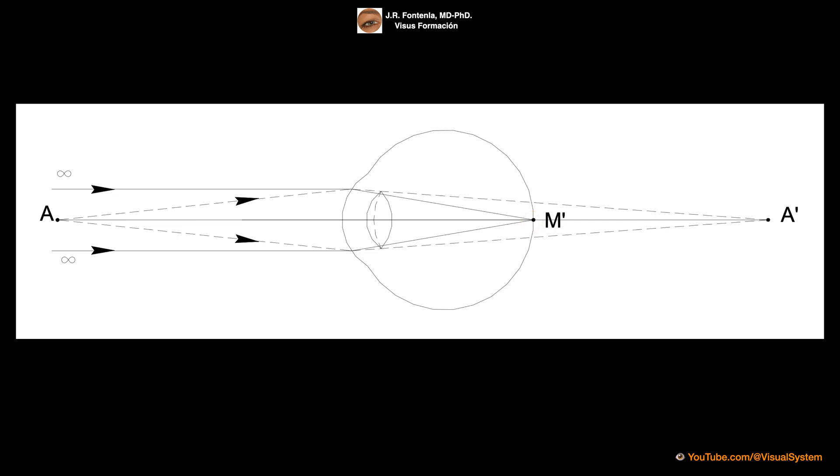If the object is placed closer at A, the image will be formed at the conjugate focus located behind the retina. And a large circle of diffusion will form on the retina, allowing only a blurred image to be seen.